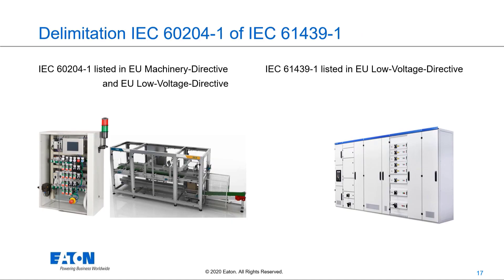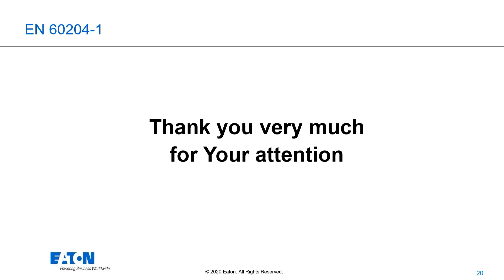Regarding the delimitation between IEC 60204-1 and IEC 61439-1: IEC 60204-1 is listed in both the European Machinery Directive and the European Low Voltage Directive, while IEC 61439-1 is only listed in the Low Voltage Directive. Therefore, for all parts related to machinery, IEC 60204-1 must be used. Thank you very much for your attention.